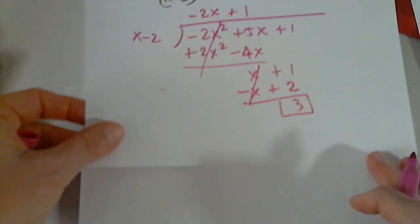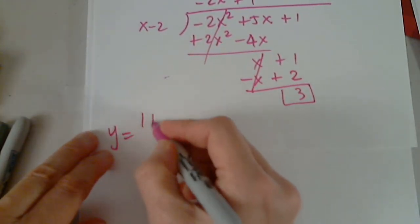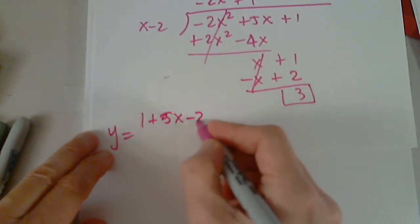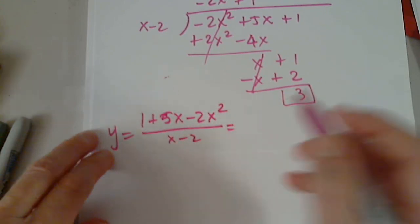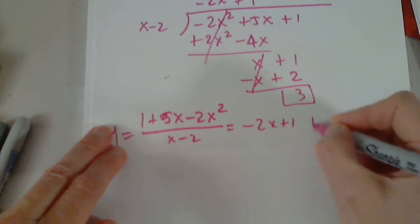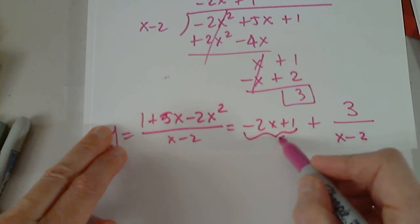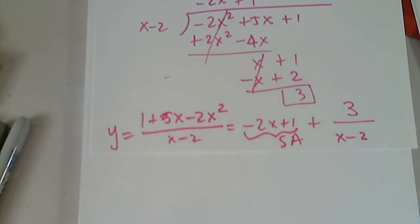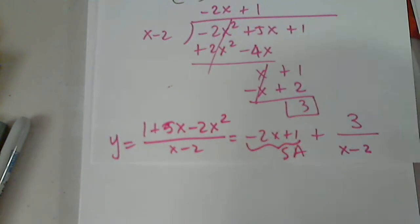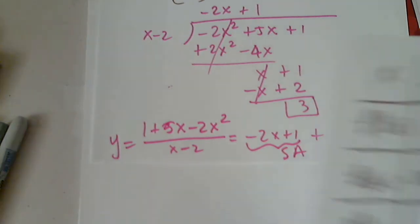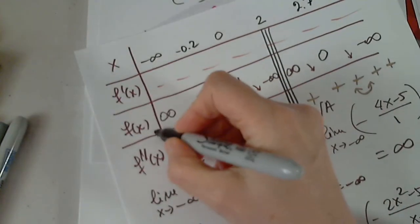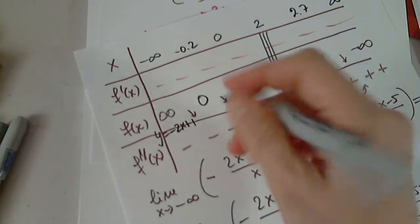So what I'm saying is that this function, negative 2x squared minus 5x minus 1 over x minus 2 is the quotient, negative 2x plus 1 plus the remainder over the divisor. This is the slant asymptote. So I go back to my table. Where is my table? I lost my table. And make a note. Y equals negative 2x plus 1. Slant asymptote.